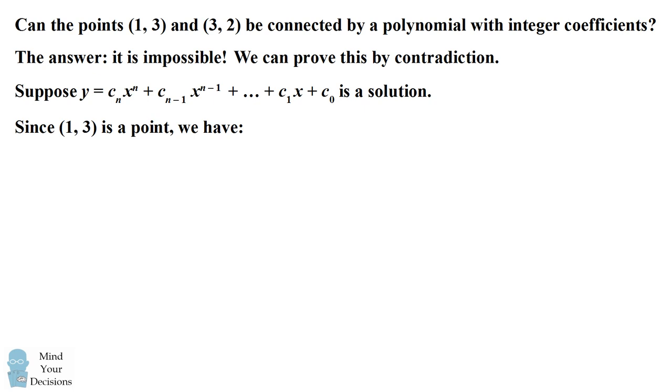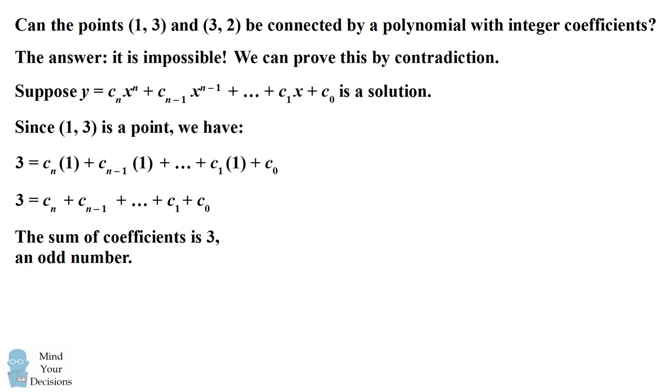Because this solution passes through the point (1, 3), that means we can substitute y = 3 and x = 1. Since 1 raised to any power is equal to 1, this simplifies to 3 = the sum of the coefficients. And we know that each coefficient is an integer. So what we've proven is that the sum of these integer coefficients is 3, which is an odd number.